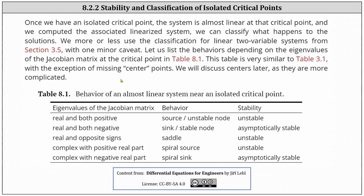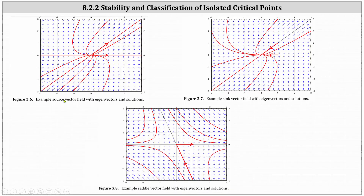Before we take a look at table 8.1, let's do a quick review from chapter 3. On the left, we have an example of a source vector field with eigenvectors and solutions. If we focus on the origin, notice how for a source vector field, the vectors are pointing out from the origin. On the right, we have an example of a sink vector field, again with eigenvectors and solutions. Starting at the origin, notice how in this case the vectors are pointing in toward the origin. Below, we have an example of a saddle vector field, again with eigenvectors and solutions. If we focus on the origin, notice some of the vectors are pointing toward the origin, some away, and some actually parallel to the origin.